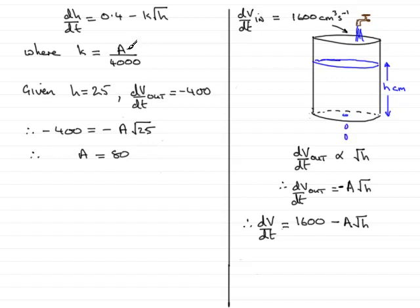Now, I know that up here the constant k was given by a over 4000, so therefore k would equal a, which was 80 over 4000.